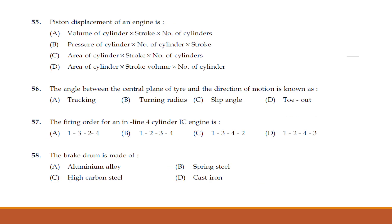The piston displacement of an engine. Options: volume of cylinder into stroke into number of cylinders; pressure of cylinder into stroke; area of cylinder into stroke into number of cylinders. The answer is option C — area of cylinder into stroke into number of cylinders is the piston displacement of an engine.